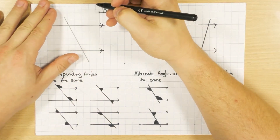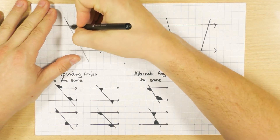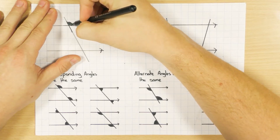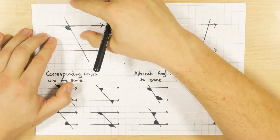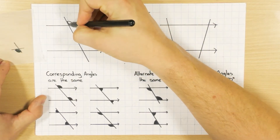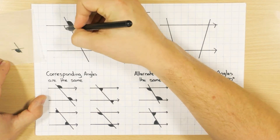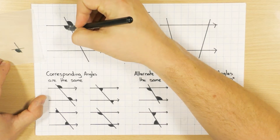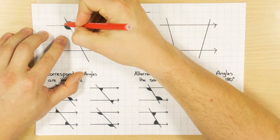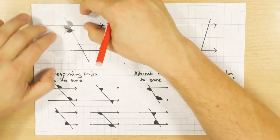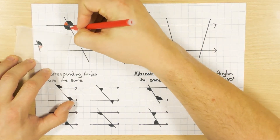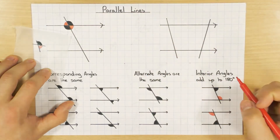If I get a bit of tracing paper and trace that cross, this obtuse angle here — if I rotate it round, you'll see it's the same angle there. So this obtuse angle is the same as this angle here. We knew that from basic angle rules: opposite angles for two straight lines are the same. If I shade in the acute angle and rotate it round, opposite angles are the same — the two acute angles are the same, and the two obtuse angles are also the same.